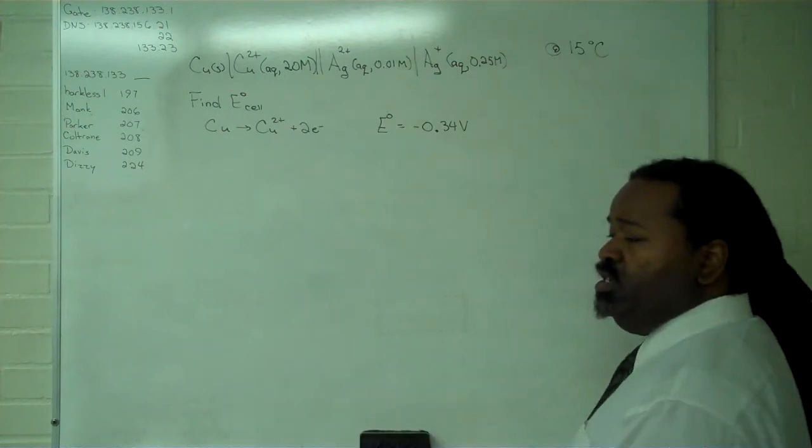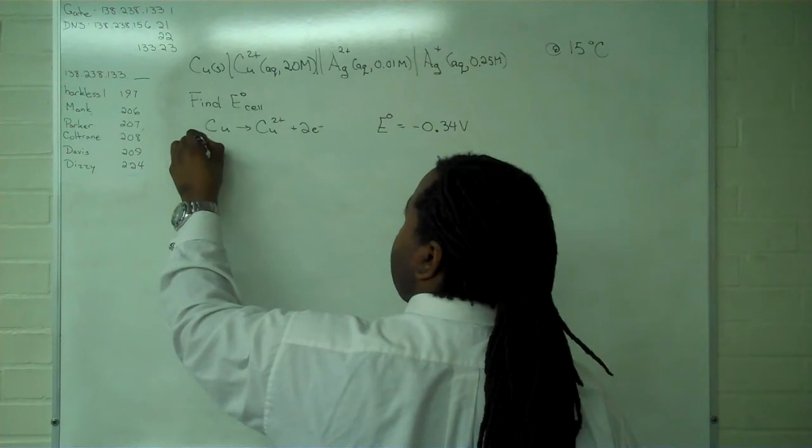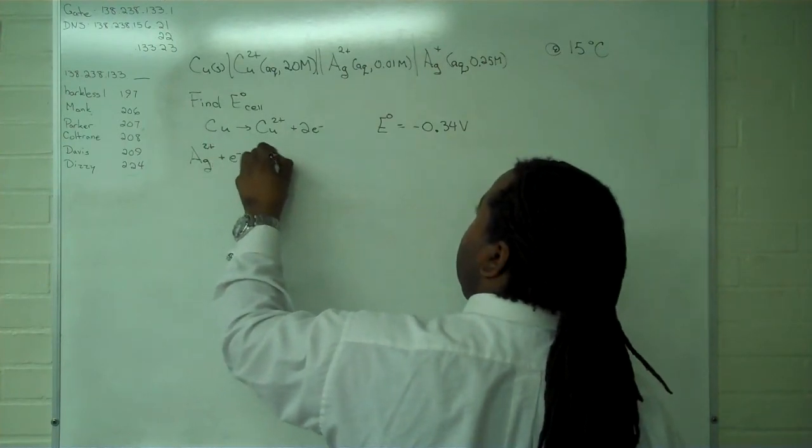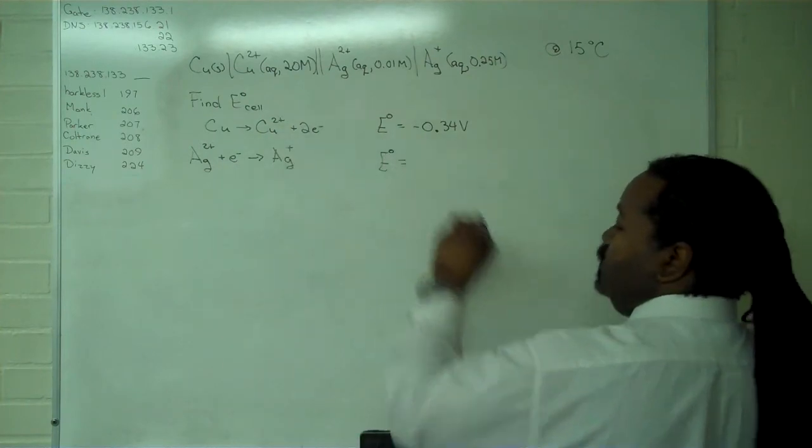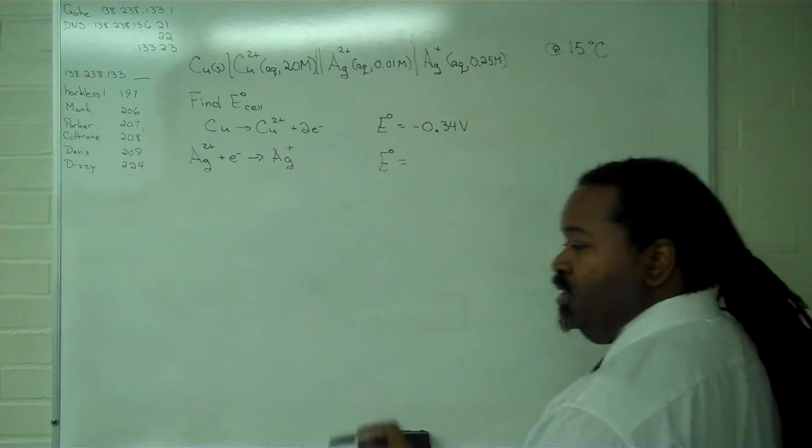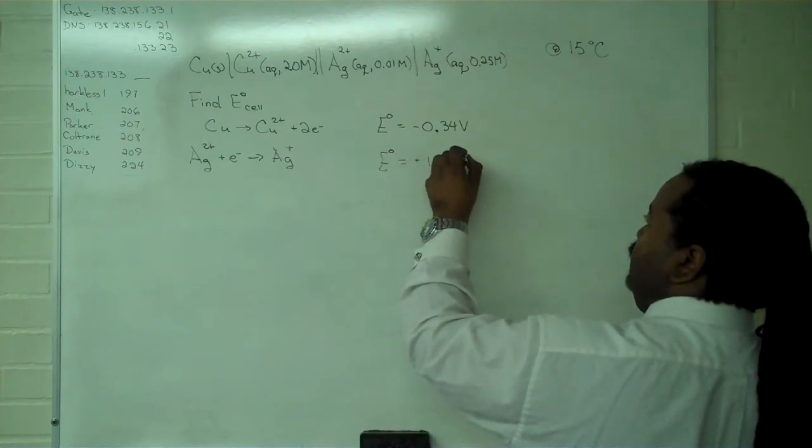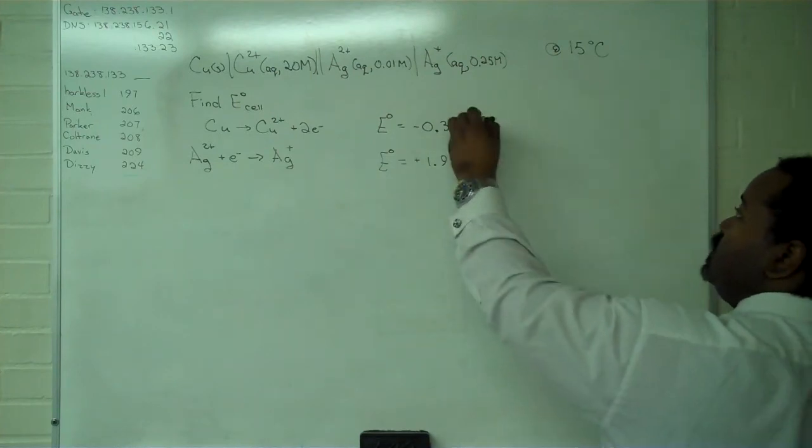Second, we have our silver. So we will have silver 2 plus, plus an electron will yield silver plus. This one is a reduction, so we can simply copy it from the table, and that is positive 1.98 volts.